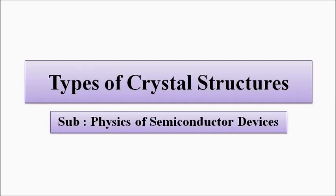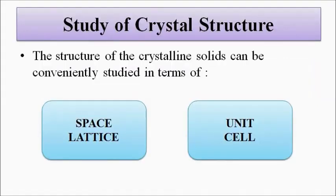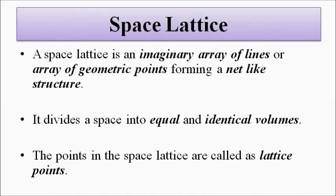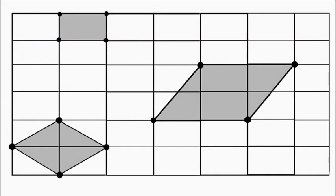We covered this in the previous video but we'll go through it quickly. To study a crystal structure, two important things come into play: first is the space lattice, and next is the unit cell. A space lattice is an imaginary construct — in two or three dimensions — which is a group of points or lines, horizontal and vertical, dividing the whole space in 2D or volume in 3D into equal areas or equal volumes. The points of intersection of these horizontal and vertical lines are called lattice points.